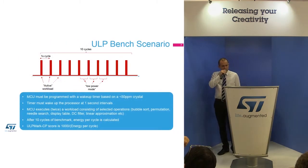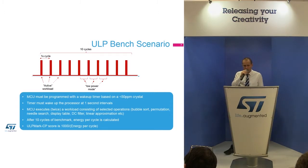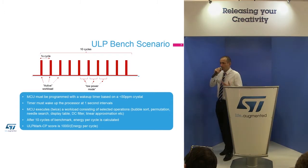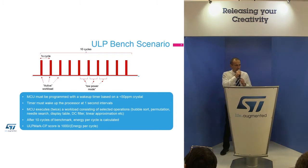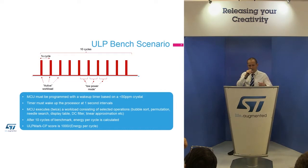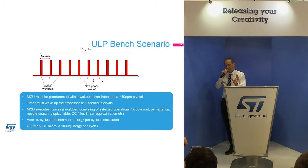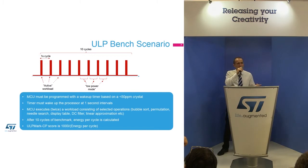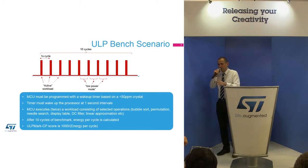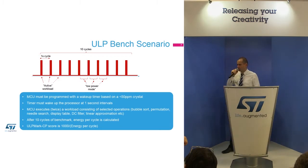Now let me explain how it works. The MCU must be programmed to wake up each second. Each second, the MCU executes twice a workload with several mathematical operations. After 10 cycles of the benchmark, there is an average of energy which is measured. The score is 1000 divided by the energy per cycle.